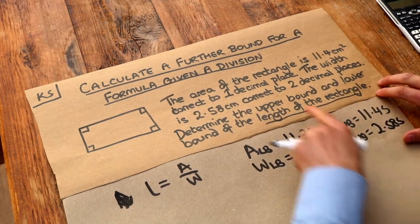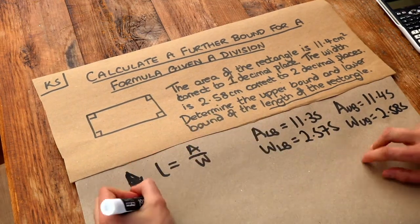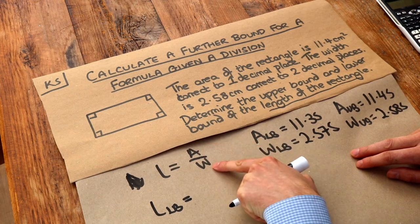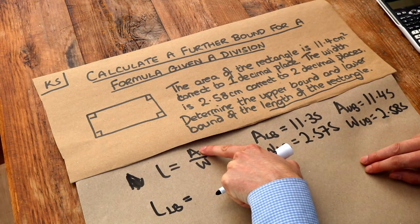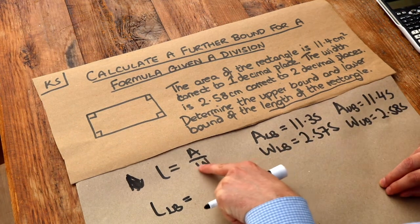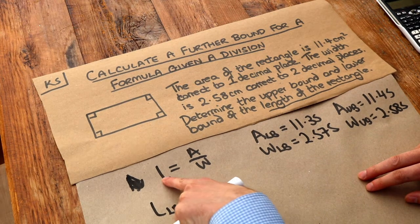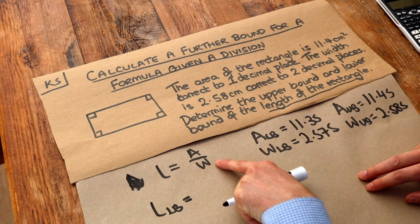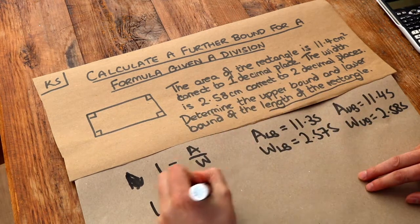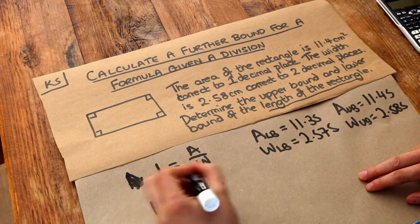Now we want to get the upper bound and lower bound of the length of the rectangle, using area divided by width. If you want to get the smallest possible value of the length, what would we use for A and what would we use for W? We can use any value between the lower bound and upper bound for the area, and any value we want for the width between those two numbers. To get a small number — the lower bound for the length — we would start with a small value and divide by a big value, because small divided by big gives the smallest possible value. So we want the lower bound of the area divided by the upper bound of the width.